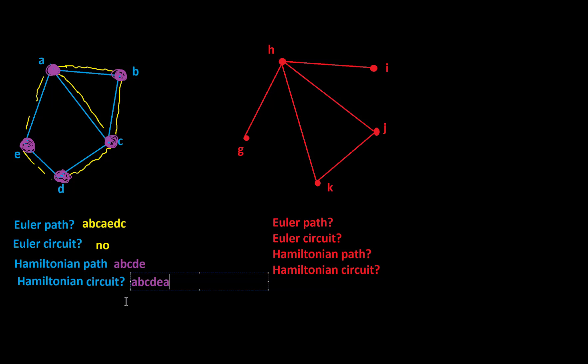So this graph did have an Euler path, did not have an Euler circuit, but it did have a Hamiltonian path and a Hamiltonian circuit. So I'd like you to pause the video now and see if you can answer the same questions with the other graph here, which has vertices G, H, I, J, and K. Okay, so hopefully you've had a moment to think about these things.